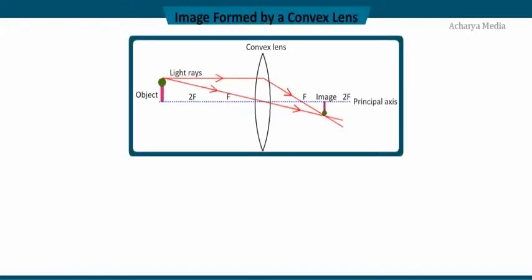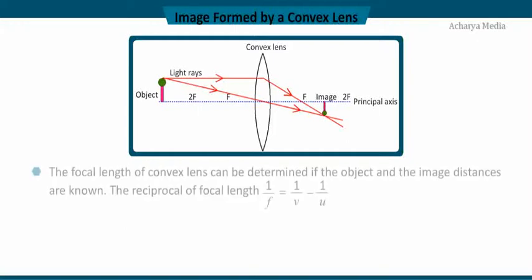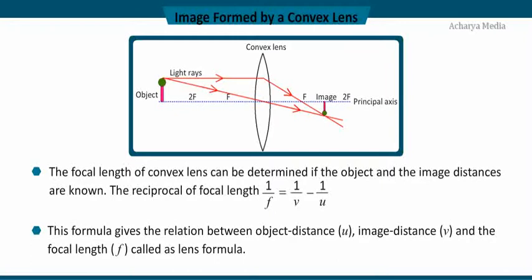Let us see the refraction through a convex lens. The image formed by a convex lens can either be enlarged or diminished depending on the object and lens distance. The focal length of a convex lens can be determined if the object and image distances are known. The reciprocal of focal length is called the lens formula. This formula gives the relation between object distance U, image distance V, and the focal length F. The lens formula is general and valid in all situations for any spherical lenses.